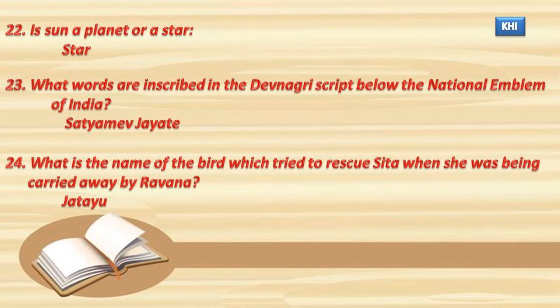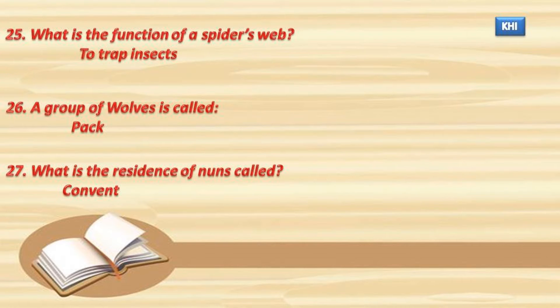23. What words are inscribed in the Devanagari script below the national emblem of India? Satyamev Jayate. 24. What is the name of the bird which tried to rescue Sita when she was being carried away by Ravana? Jatayu. 25. What is the function of a spider's web? To trap insects.